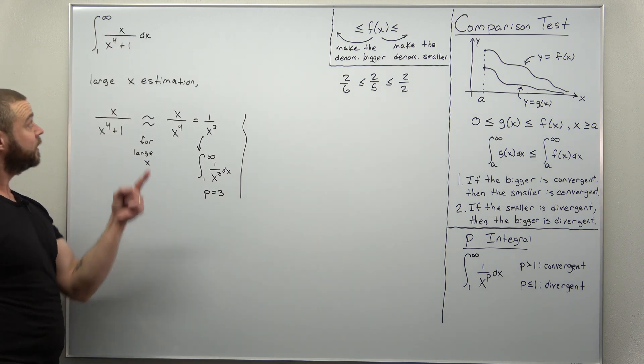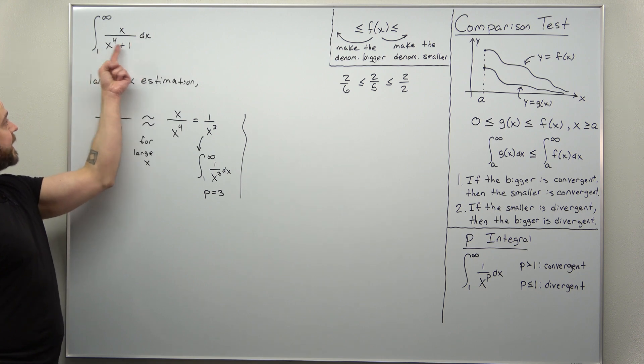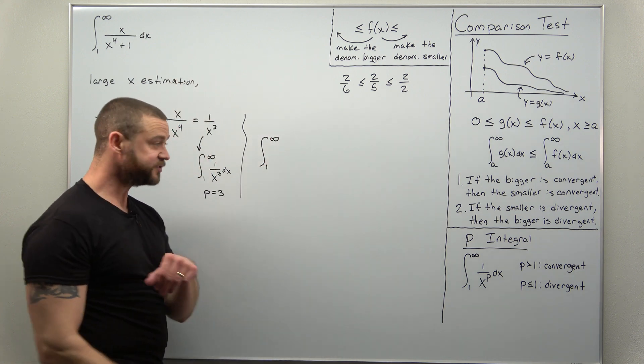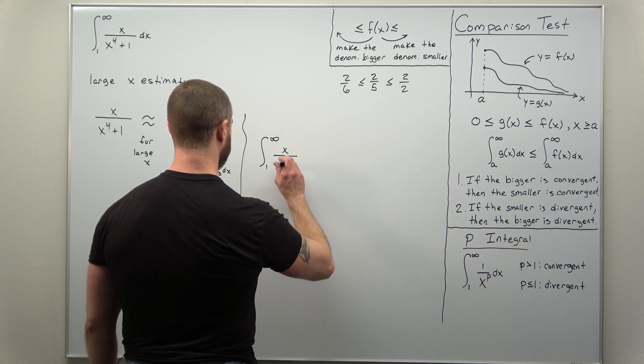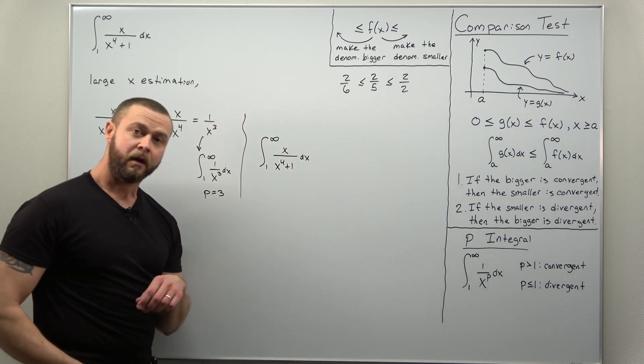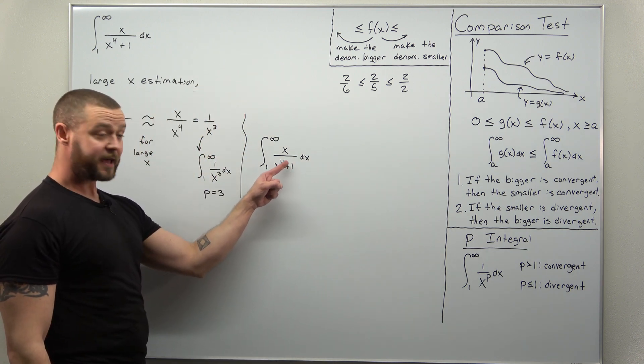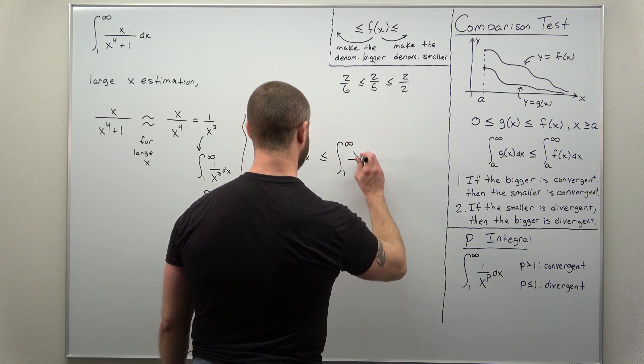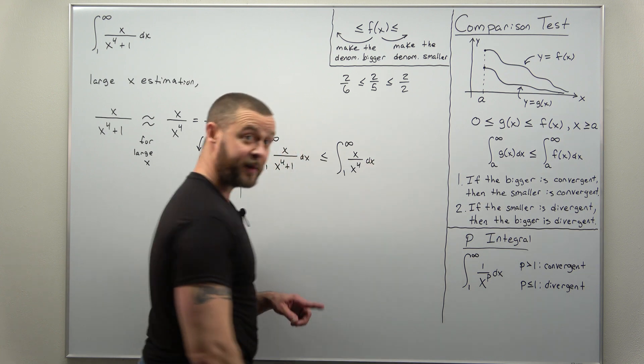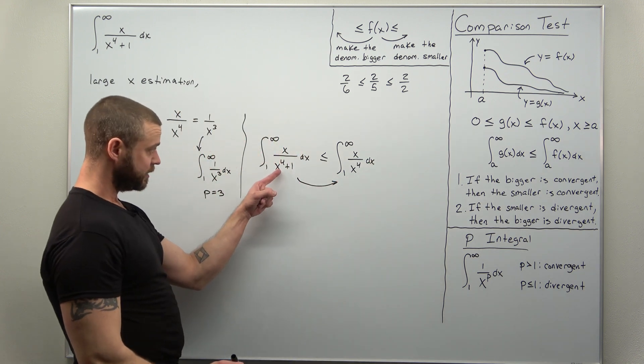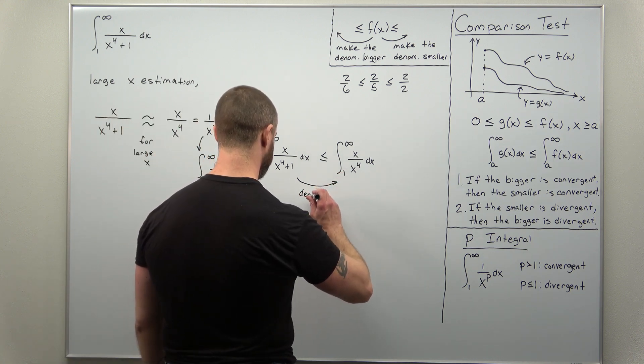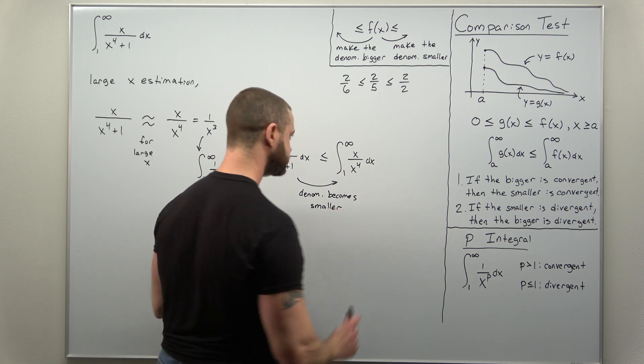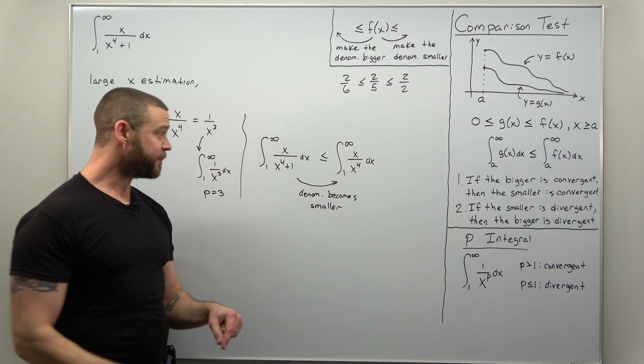Now, this might sound confusing, but the work is rather simple. Notice we have a fraction here. We can make this fraction bigger by making that whole denominator smaller. So, let's go ahead and work this out. The calculations are really simple. We have our function, x to the fourth plus 1, and I'm going to make this denominator smaller by getting rid of the plus 1. So, we have the improper integral from 1 to infinity of x divided by x to the fourth. Notice here, just so you see it, this denominator has become smaller. So, that's how we get that inequality.